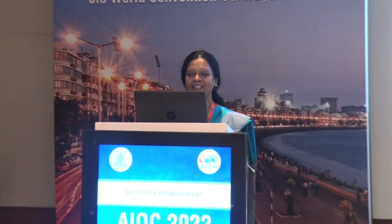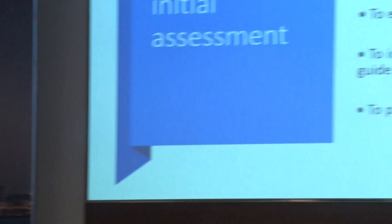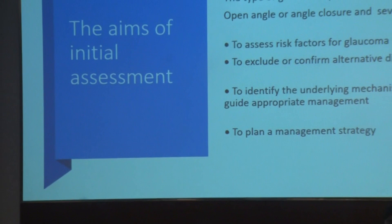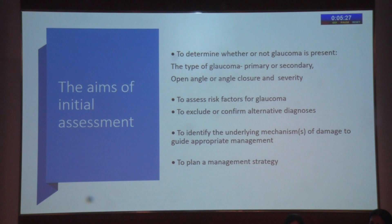The topic is a comprehensive guide to workup, investigations, and follow-up in glaucoma. The aims of initial assessment are to determine whether or not glaucoma is present, the type of glaucoma — whether primary or secondary, open angle or angle closure — and the severity. We also need to assess the risk profile, exclude or confirm alternative diagnoses, identify the underlying mechanism of damage because this guides appropriate management, and finally plan a management strategy.